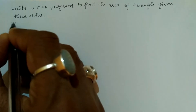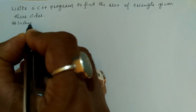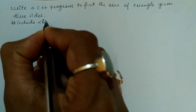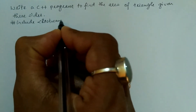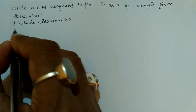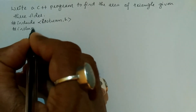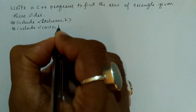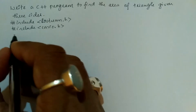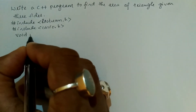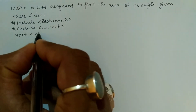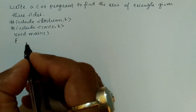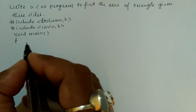Now let us write the preprocessor directives. Hash include in angular brackets: iostream.h header file. The next preprocessor directive is hash include in angular brackets: conio.h header file. Then we write the void main function with a curly open brace, indicating the beginning of the body of the main function.